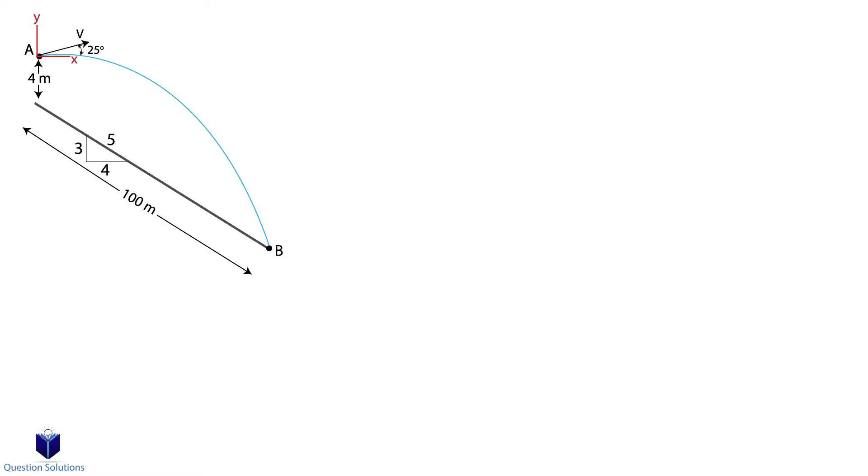For the horizontal direction, the starting location is at 0 meters. The final location is at 80 meters. That's 4 over 5 multiplied by 100 meters. The velocity is V cos 25 degrees.